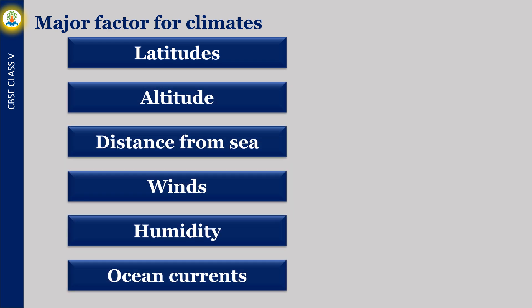The major factors affecting climate are latitudes, altitude, distance from sea, winds, humidity, and ocean currents. We will learn all these factors in detail.